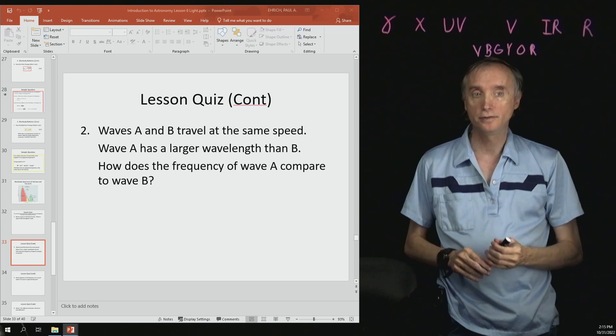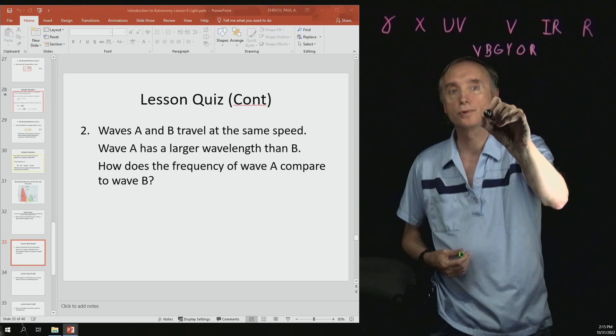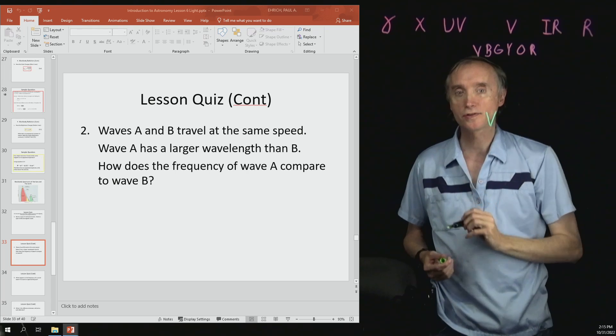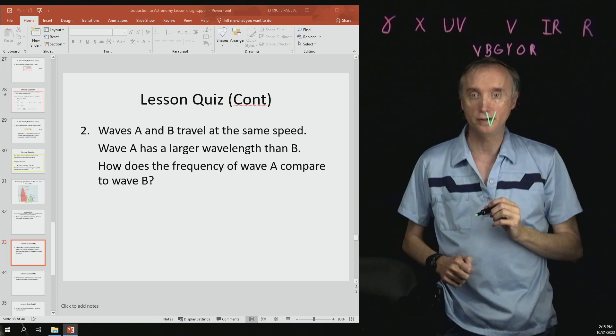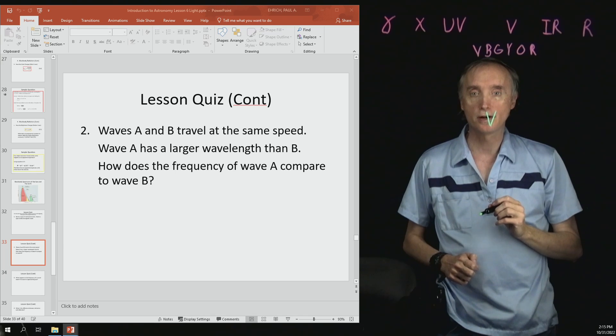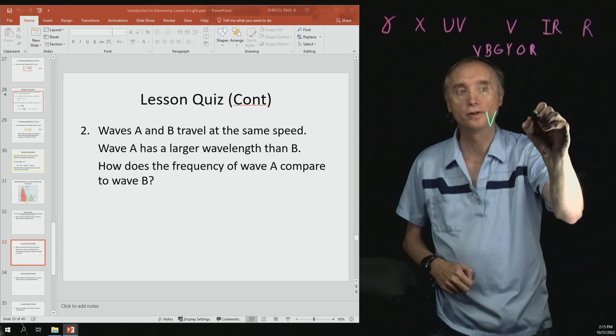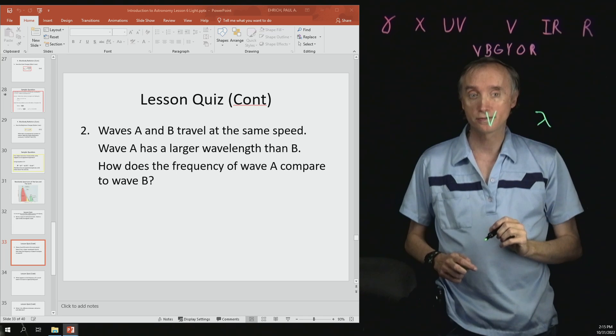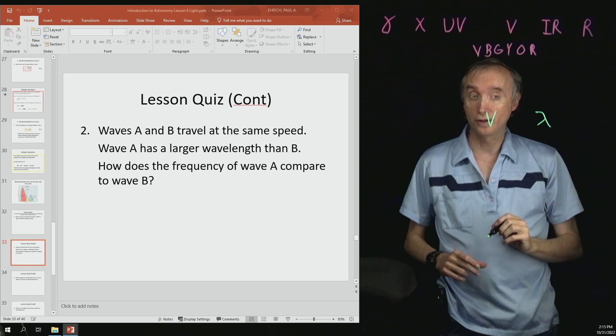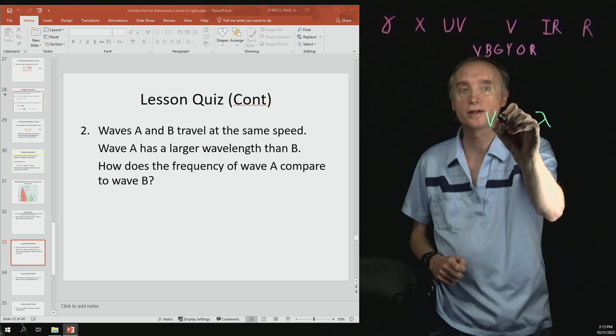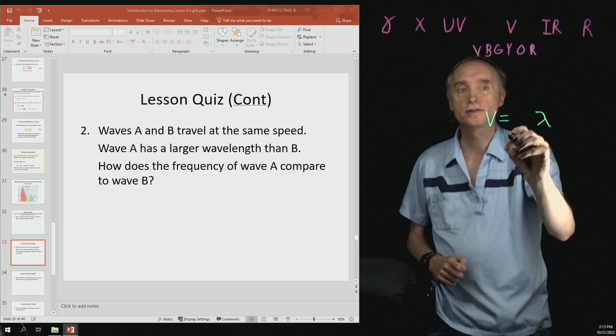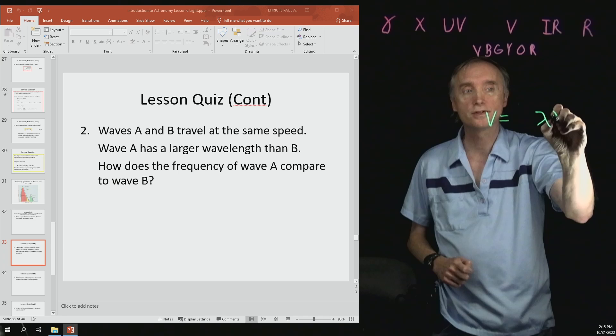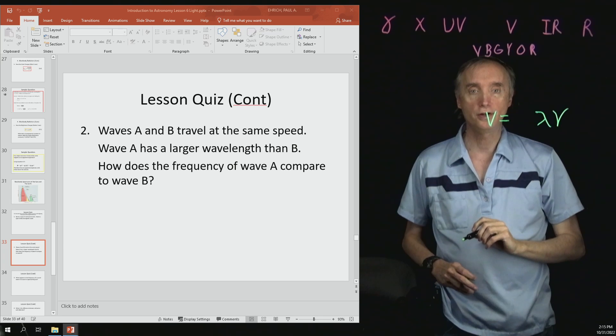Now in order to solve this one, we need a formula that is going to relate velocity because it says something about speed, and it's also going to have something that has a wavelength in it. So if you go back through your formulas, there's really only one that's going to work. And so that's the one that says that speed is going to be equal to wavelength times frequency.